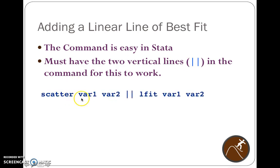So it's just scatter, variable 1, variable 2, whatever those are called. So scatter life expect 14, household income. Then these two vertical lines. So scatter space, variable 1 space, variable 2 space, vertical line, vertical line space. And then I type in L fit, variable 1, variable 2. I suspect this stands for linear fit. These should be in the same order if you want these to produce the line of best fit for these.